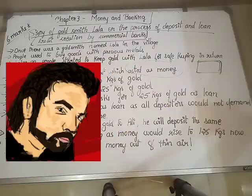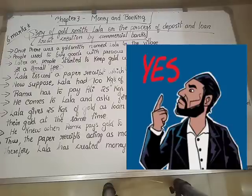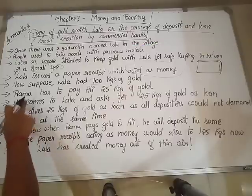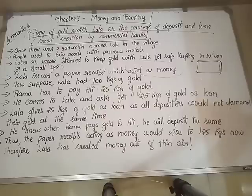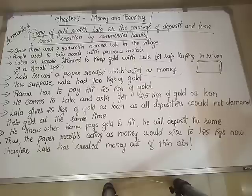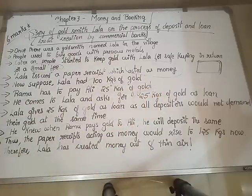Now there comes a person called Ramu. Ramu had to pay Ali 25 kgs of gold. Ramu thinks he can go to Lala — he goes to Lala and asks: can you give me 25 kgs of gold as a loan? So Ramu comes to Lala and asks for 25 kgs of gold as loan.